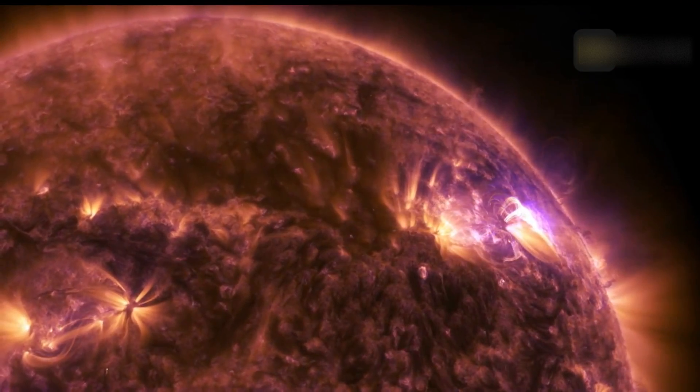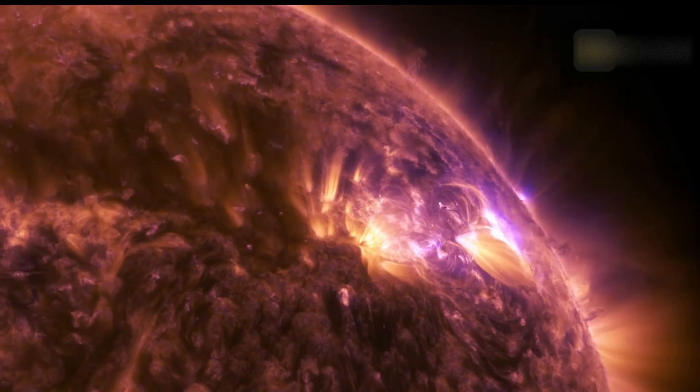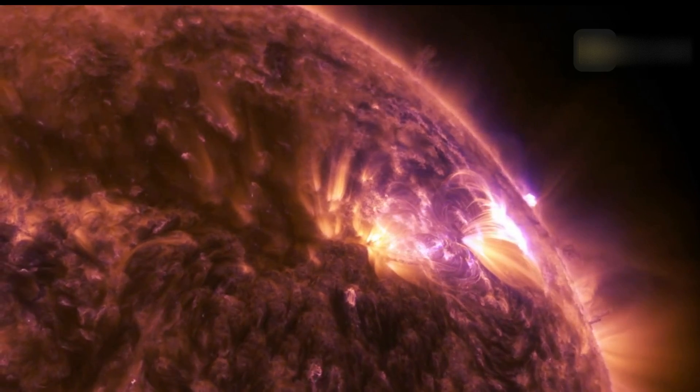Powerful solar flares like the one observed yesterday can cause shortwave radio blackouts on the sunlit side of Earth at the time of the eruption.